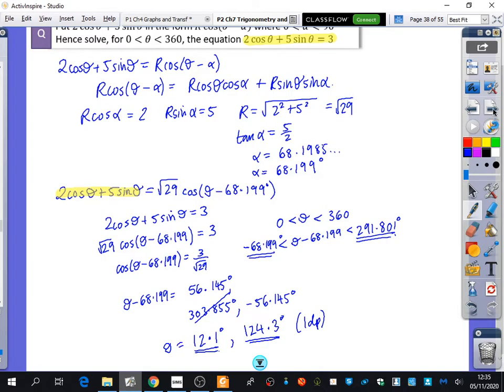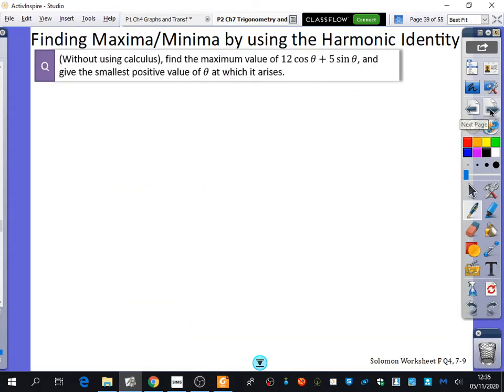The other thing that we can use the harmonic identity for is for finding maxima and minima rather than doing differentiation. Maxima and minima is just the plural of maximum points and minimum points.